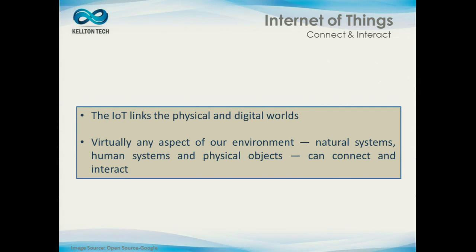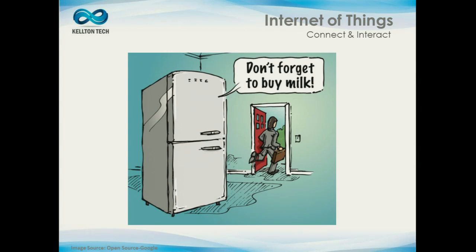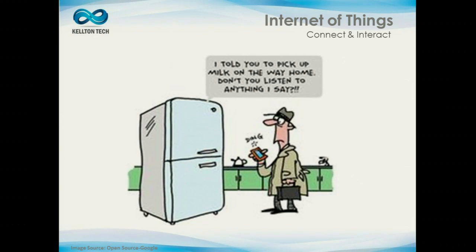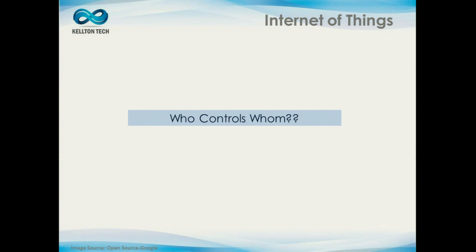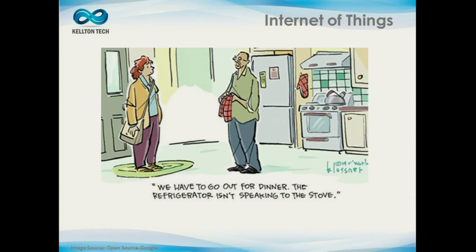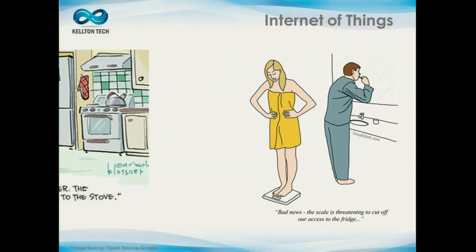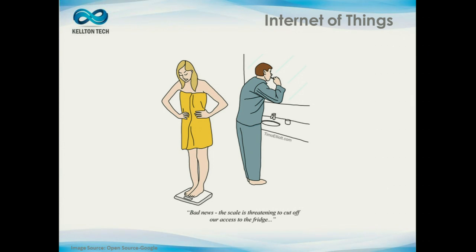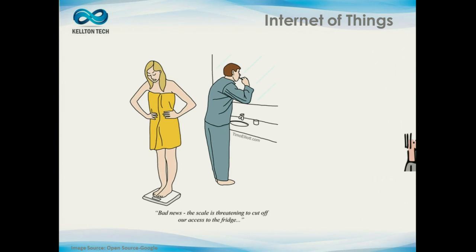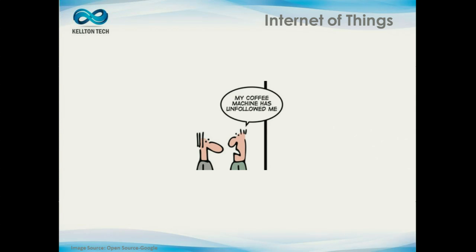The Internet of Things is basically linking the physical and digital worlds. Essentially any part of our environment — natural systems, human systems, physical objects — they're already starting to connect and interact. For example, your refrigerator will start asking you to get milk on the way back home. And if you forget, it'll kind of replace your spouse and complain to you. You could even get unfollowed by your coffee machine.